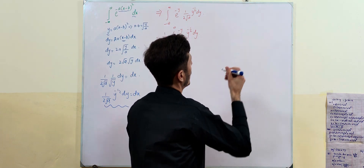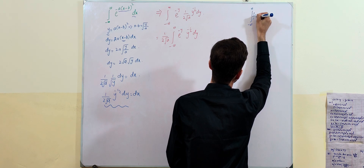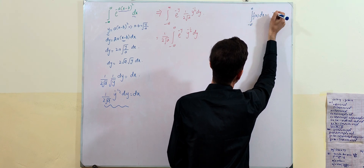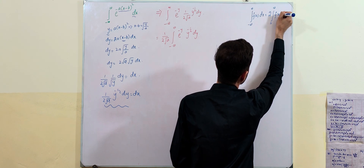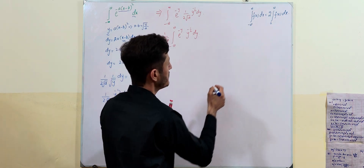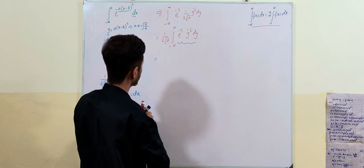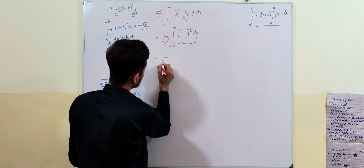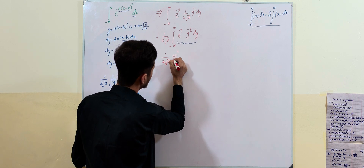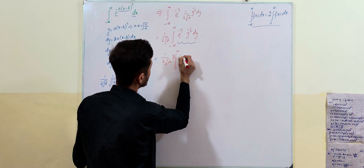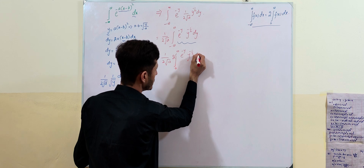Now, using the property of integration: if a function is symmetric, the integral from minus infinity to infinity of f(x) dx equals 2 times the integral from 0 to infinity of f(x) dx. Applying this property, we can write the expression as (1 divided by 2 square root of a) times 2 times the integral from 0 to infinity of e to the minus y times y to the minus 1/2, dy.